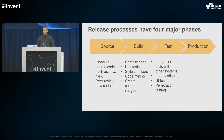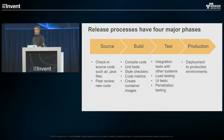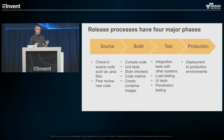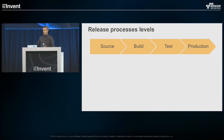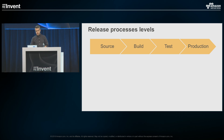And then lastly, this concept of Production — actually getting your application and software out to your users so they can consume it and you can find success in the delivery of that application. Those are the four major phases. What come along with these are three different types of process levels that exist across them.